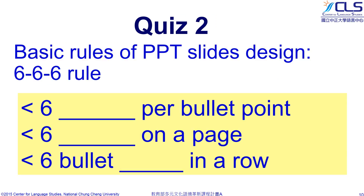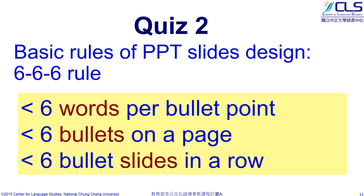Question 2: What is the 666 rule? No more than 6 words to a bullet, no more than 6 bullets on a page, and no more than 6 bullet slides in a row.